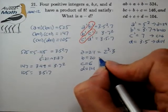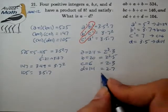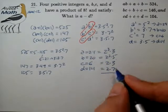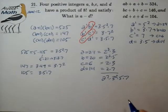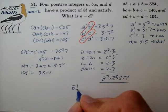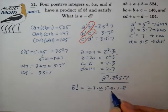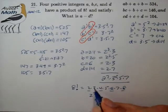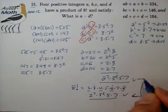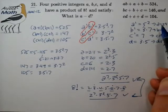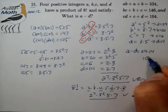The product A times B times C times D equals 2 to the 7th times 3 squared times 5 times 7. Let's verify: 8 factorial equals 2 times 3 times 4 times 5 times 6 times 7 times 8, which gives factors of 2 to the 7th, 3 squared, 5, and 7. It matches! So the answer we're looking for is A minus D, which is 24 minus 14, and the answer is 10.